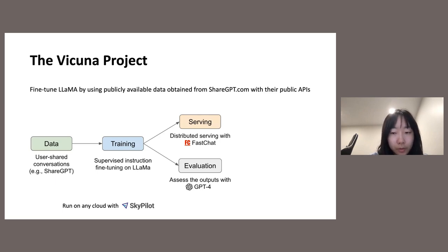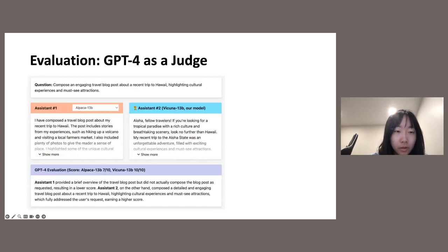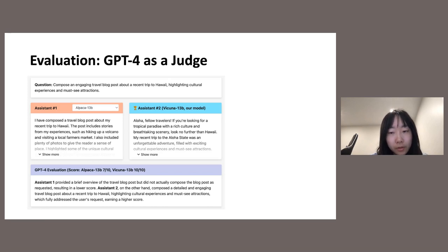We used SkyPilot to launch our training jobs — it can automatically find spot instances from multiple regions and handle preemption. After training the models, we built a distributed multi-model serving system to host them. We utilized PagedAttention, a high-throughput serving method using dynamic batching and paged memory management. We found Vicuna can generate much more detailed and organized answers compared to other models, but it is extremely hard to quantitatively measure the performance, so we tried two approaches to evaluate Vicuna.